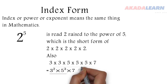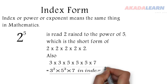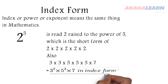We can see the other number: 3 times 3 times 5 times 5 times 5 times 5 times 7. In index form, it's written 3 raised to the power of 2, times 5 raised to the power of 3, times 7. We can see that 3 is multiplying itself 2 times — that is why it is 3 raised to the power of 2. 5 is multiplying itself 3 times — that is why it is 5 raised to the power of 3. And 7 is just 7.